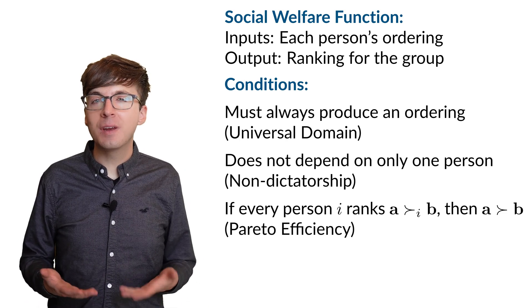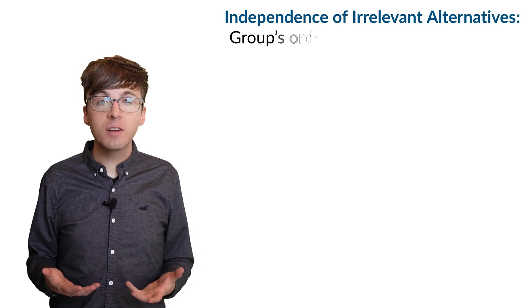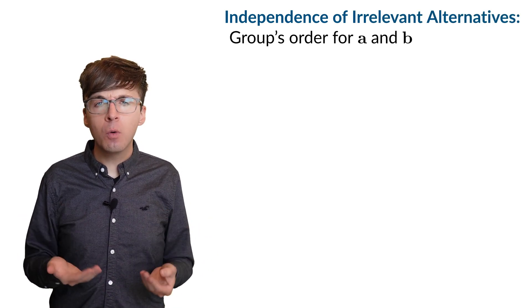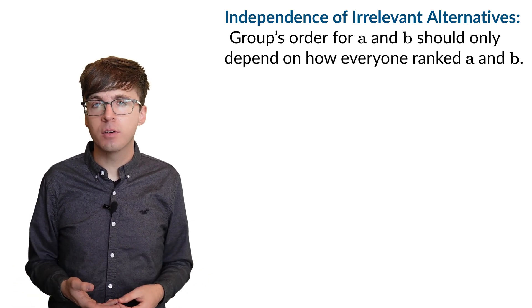The last requirement is known as independence of irrelevant alternatives. The group's preference between A and B should only depend on how everyone ranked A and B, and it should not depend on other alternatives.